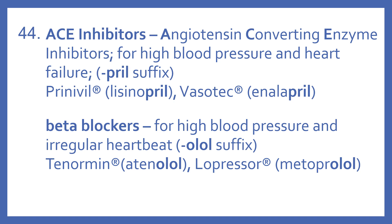The beta blockers are for high blood pressure and irregular heartbeat, and they have the '-olol' suffix. So, Tenormin, which is atenolol, and Lopressor, which is metoprolol — those are examples of beta blockers.